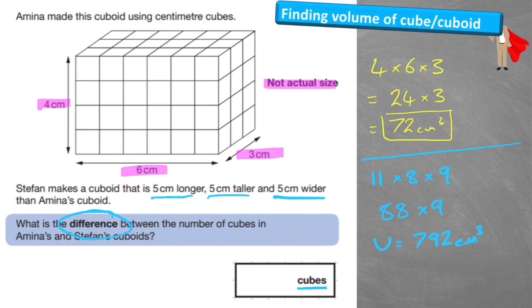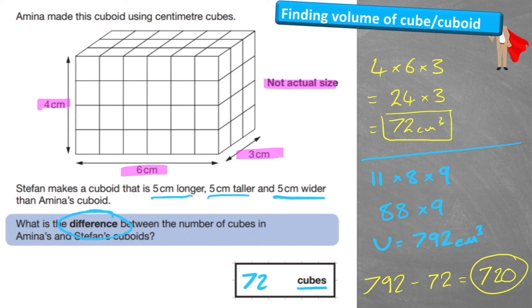To find the difference, we subtract 72 from 792, leaving us 720 — giving us an answer of 720 cubes.